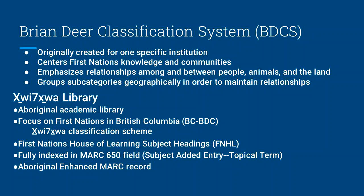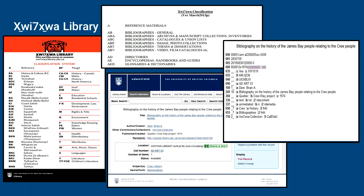There were over 11,000 subject headings and they are available online for other institutions to use and to study. FNHL is recognized by the Library of Congress as an internationally authorized resource and is fully indexed in the MARC 650 field with full subfield coding, which allows for both browsable indexes and faceted searching by subtopic. The library also uses an Aboriginal enhanced MARC record that provides instructions on recording Aboriginal creators, corporate bodies, languages, and dialects. This enhanced record improves access to the Aboriginal content because it allows for more accurate and detailed Indigenous metadata. Here on this slide, you can see the integration of Xwi7xwa's IKOS with established metadata and cataloging standards.